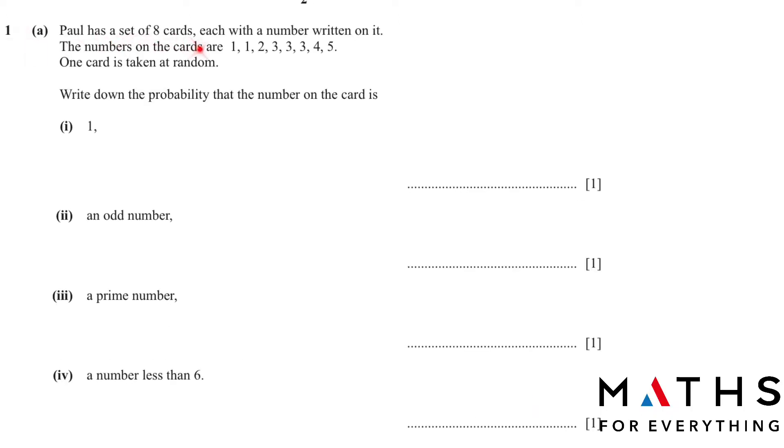Let's start with the first question. Paul has a set of eight cards, each with a number written on it. The numbers on the cards are given to us. One card is taken at random. Write down the probability that the number on the card is 1. So the favorable outcome that we want is 1. There are two ones. So write 2, and the total cards are 8. But you can't leave it like that. You have to simplify it. Just put it in the calculator and you will get the answer 1 over 4.